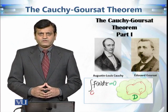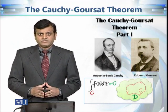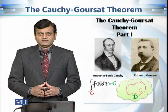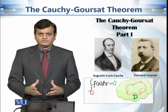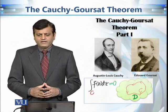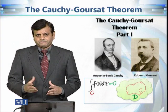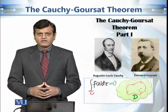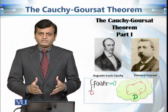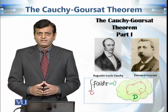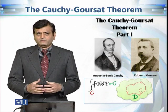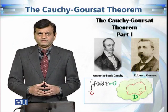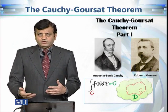We are going to start our discussion from one of the most basic, fundamental, and important results of complex analysis known as the Cauchy-Goursat theorem. As the name suggests, it is a contribution of two mathematicians: Augustin Louis Cauchy, a French mathematician, and another French mathematician, Édouard Goursat. It is a series of two results. The first result was given by Cauchy, known as Cauchy's theorem, in 1825. Goursat then generalized it in 1883, and hence the most generalized version is the Cauchy-Goursat theorem.